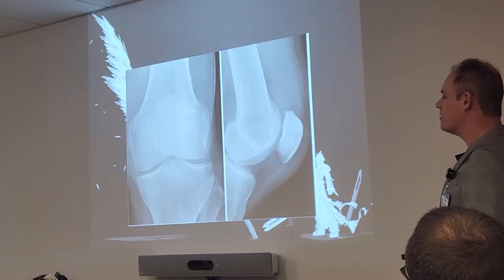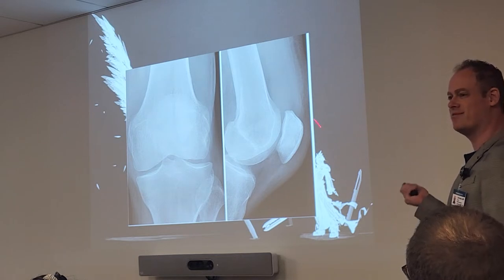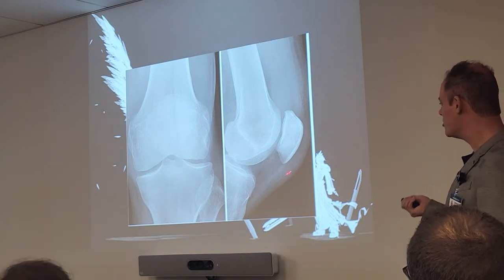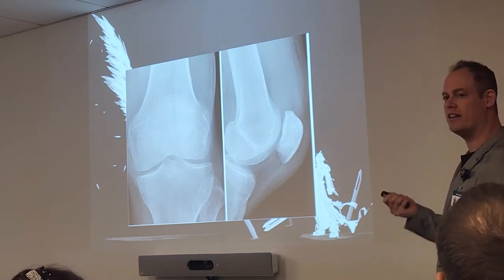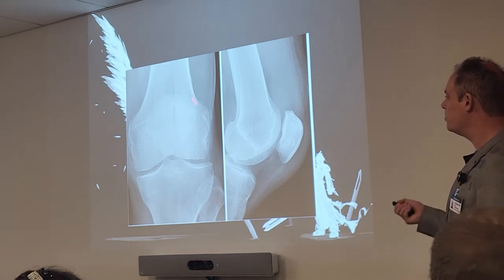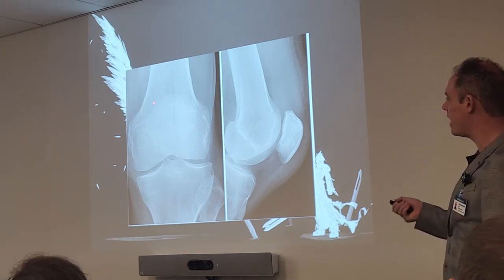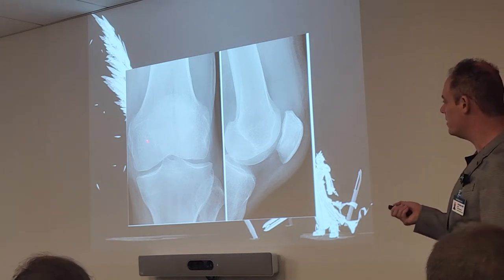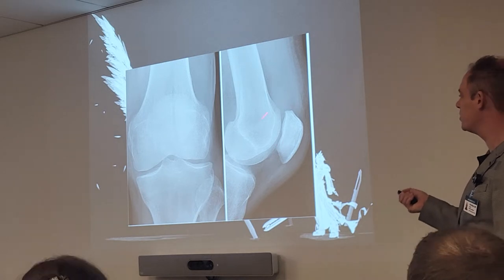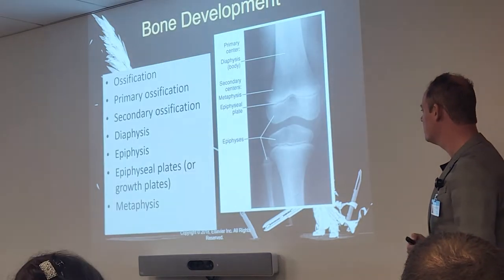Some of you saw these knee views yesterday. There's the largest sesamoid bone in the body — the patella — superimposed on the AP view. You can just barely see the outline of it. The lateral view shows the joint space between the femur and the patella.